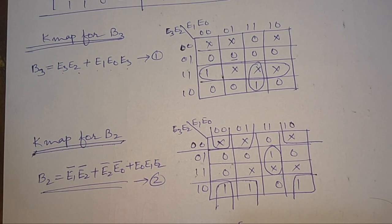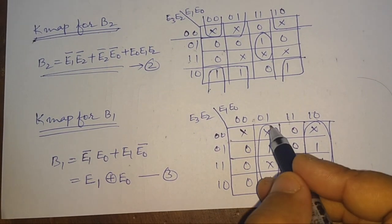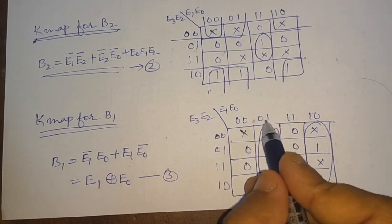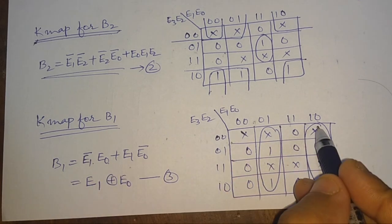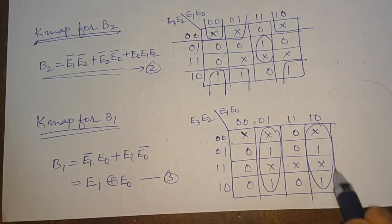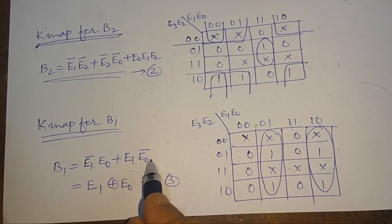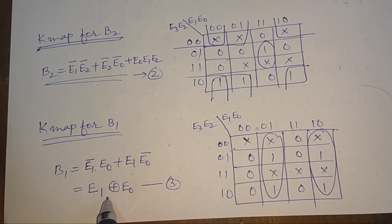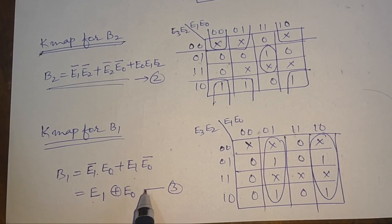Similarly, we can find the expression for B1. For B1 we have two terms: from the first combination we have E1-bar·E0, and from the second combination we have E1·E0-bar. This is the expanded form of an EXOR operation, so we can write it as B1 = E1 XOR E0.